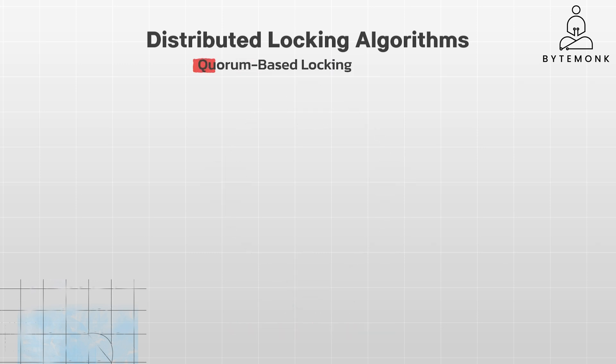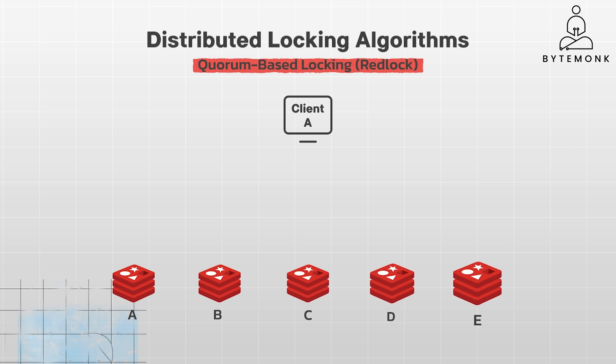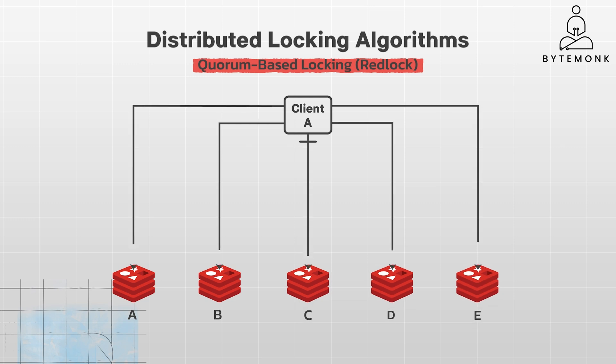Let's talk about quorum-based locking, which is usually implemented using Redis. Imagine a cluster of five Redis instances — nodes A, B, C, D, and E. We want to implement a distributed lock using RedLock, which is a Redis algorithm, to ensure only one client can access a shared resource at a time, even in the face of node failures. Here are the algorithm steps: at acquire time, the client records the current time as T1.